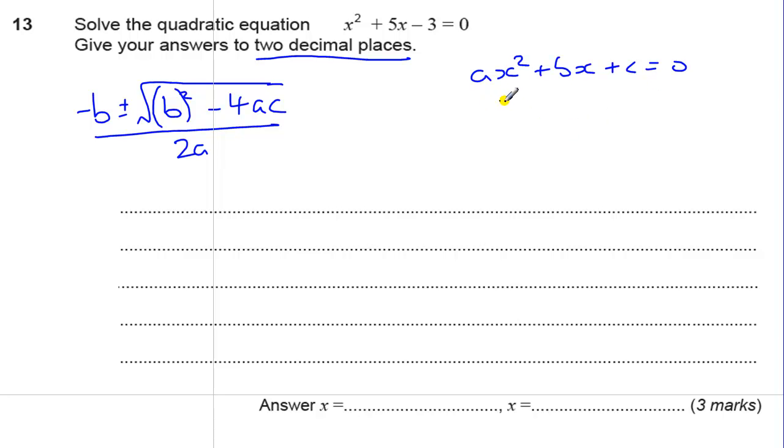And we've got x squared plus 5x minus 3 equals 0. So, clearly, c is minus 3, b is plus 5, but a, it's quite tempting to think a is going to be 0. But if we remember, this x squared actually means 1x squared, but we never write the 1 there. So, a is in fact 1.